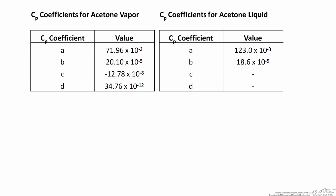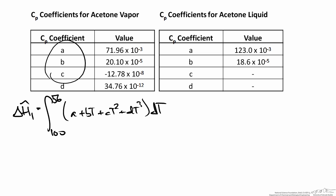In our first step we are cooling acetone vapor from the inlet condition at 100°C to the boiling point. We calculate delta H1 by integrating the heat capacity from 100°C to 56°C using the four vapor-phase coefficients. Evaluating this integral and plugging in the coefficients and limits of integration, we find that the sensible heat associated with this step is negative 3.82 kJ/mol.